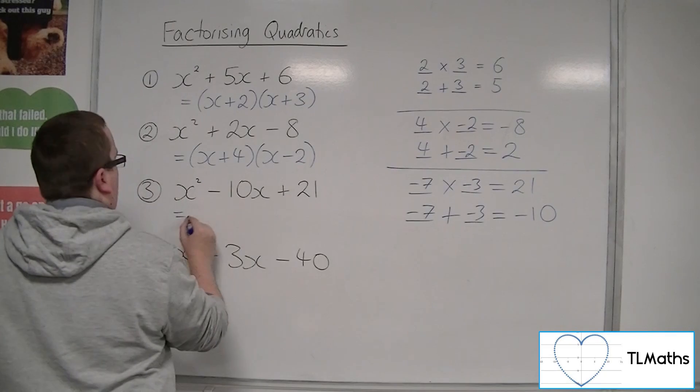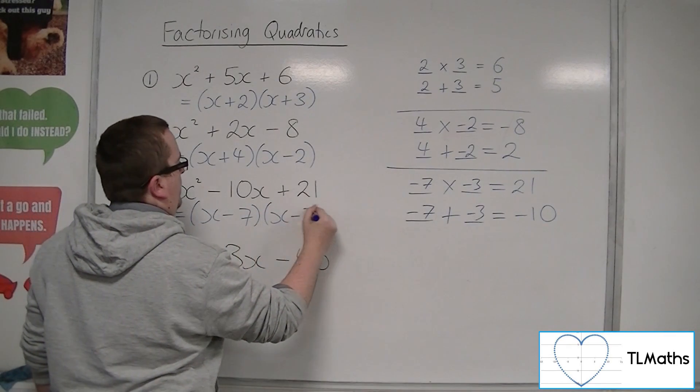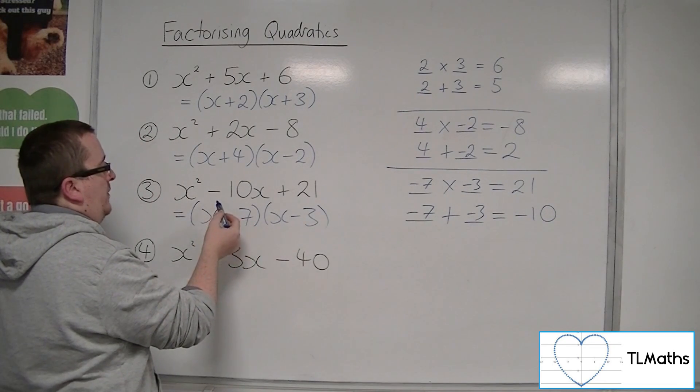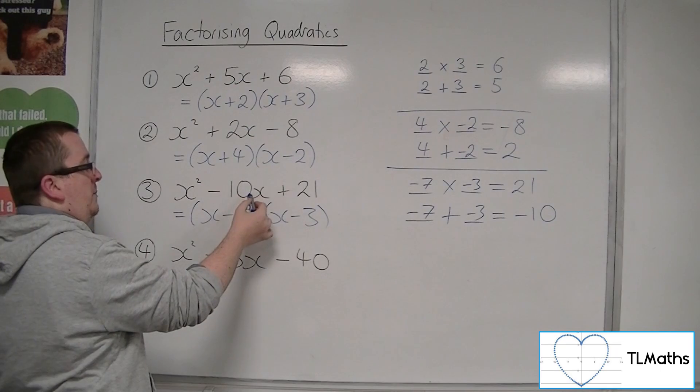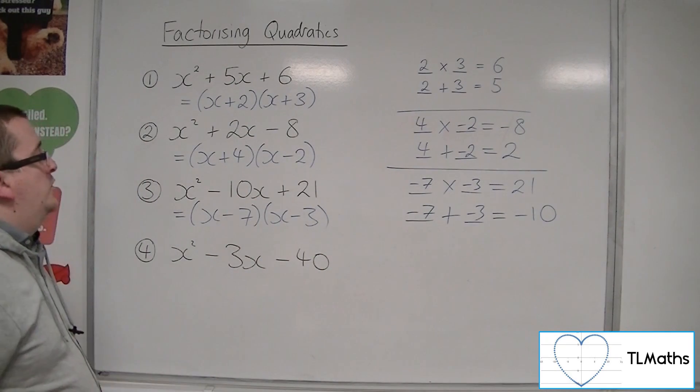So we would have x minus 7 and x minus 3 inside the bracket. x squared minus 7x minus 3x makes the minus 10x, and minus 7 times minus 3 makes the plus 21.